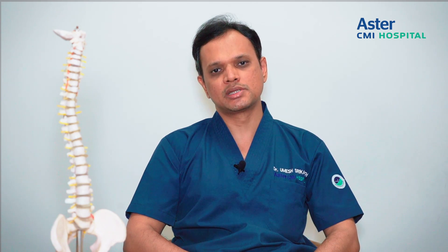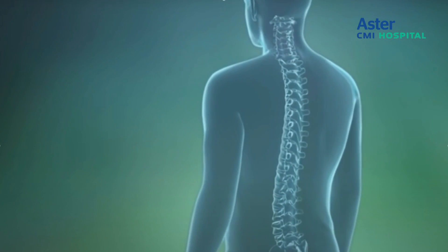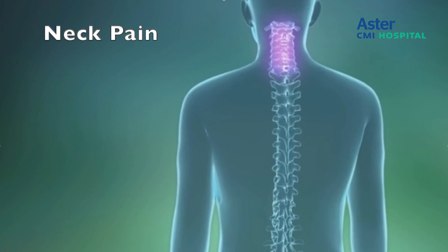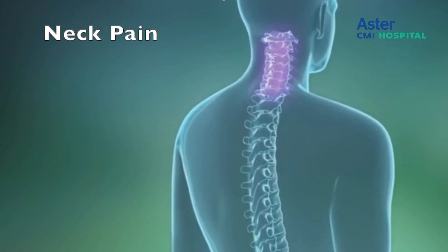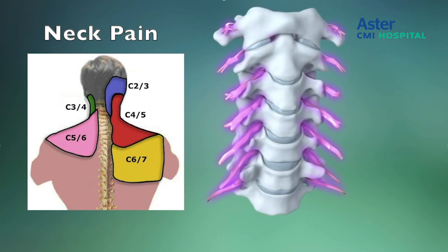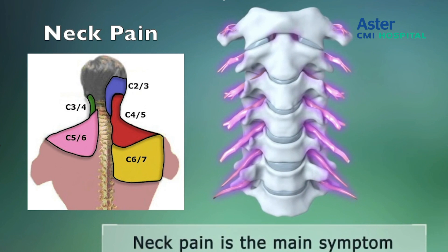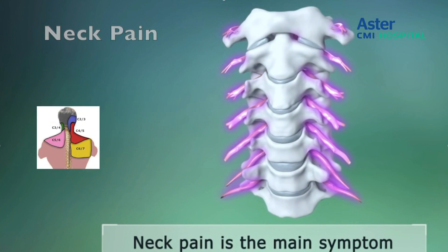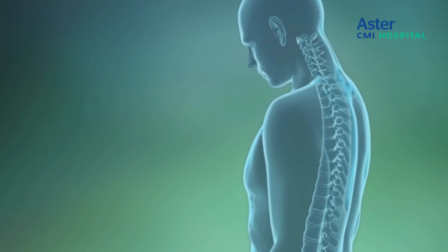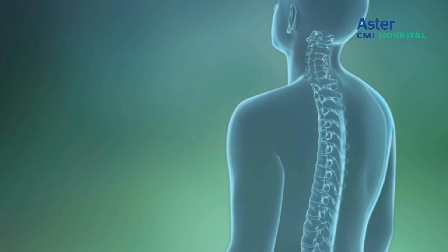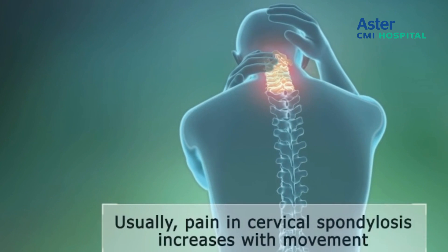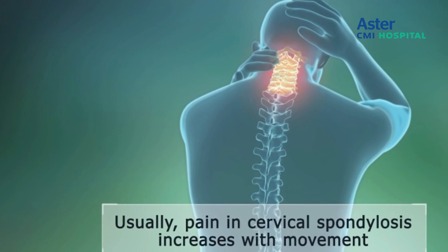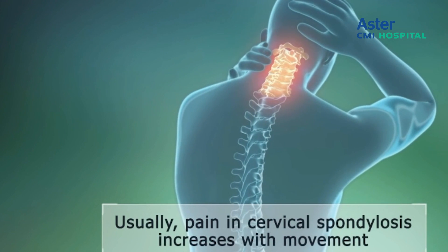The most common symptom that anybody presents with in cervical spondylosis is neck pain, and it can be of varying severity or a varying pattern. It can be continuous in some cases or intermittent — only on and off, once a week or once a month. Sometimes people have this neck pain and virtually with some physiotherapy or just a pill, the neck pain completely disappears. This is one of the commonest patterns of presentation and is easily manageable.